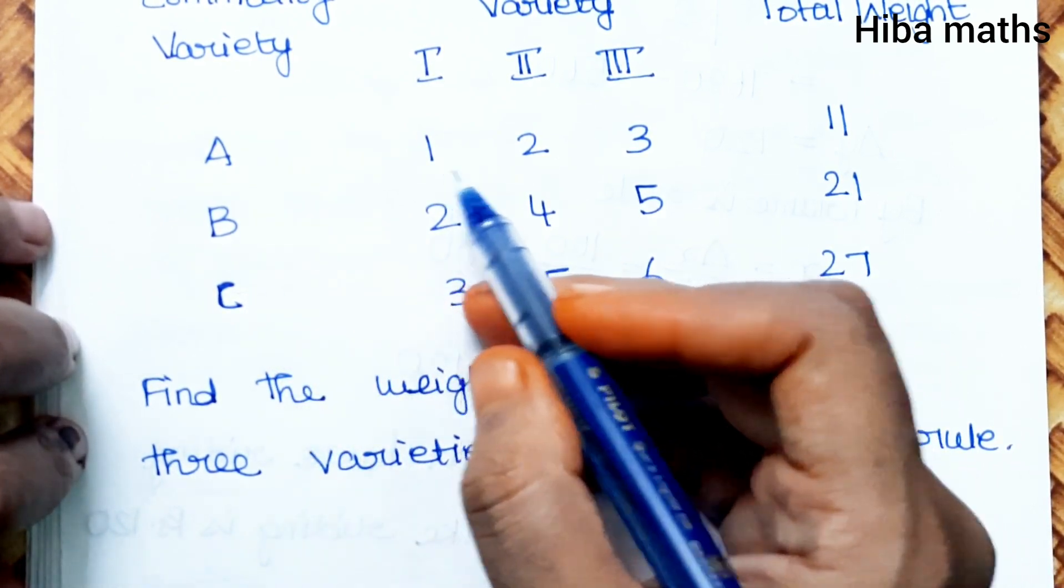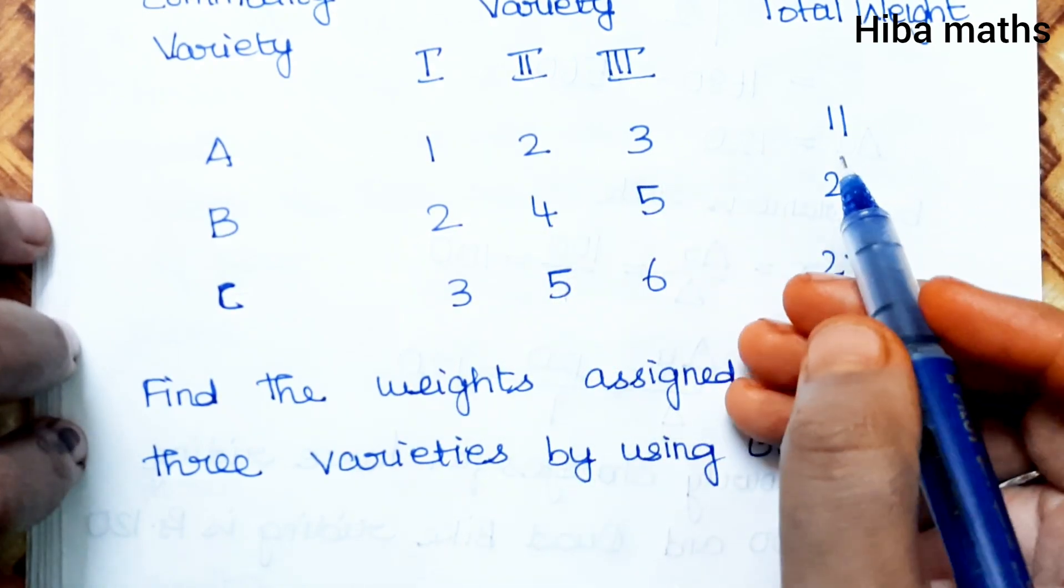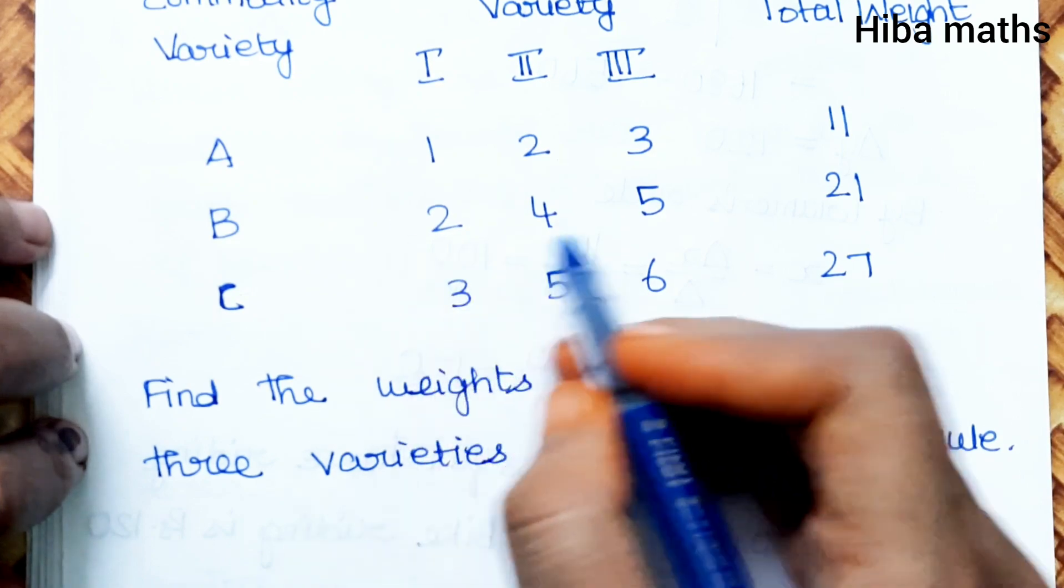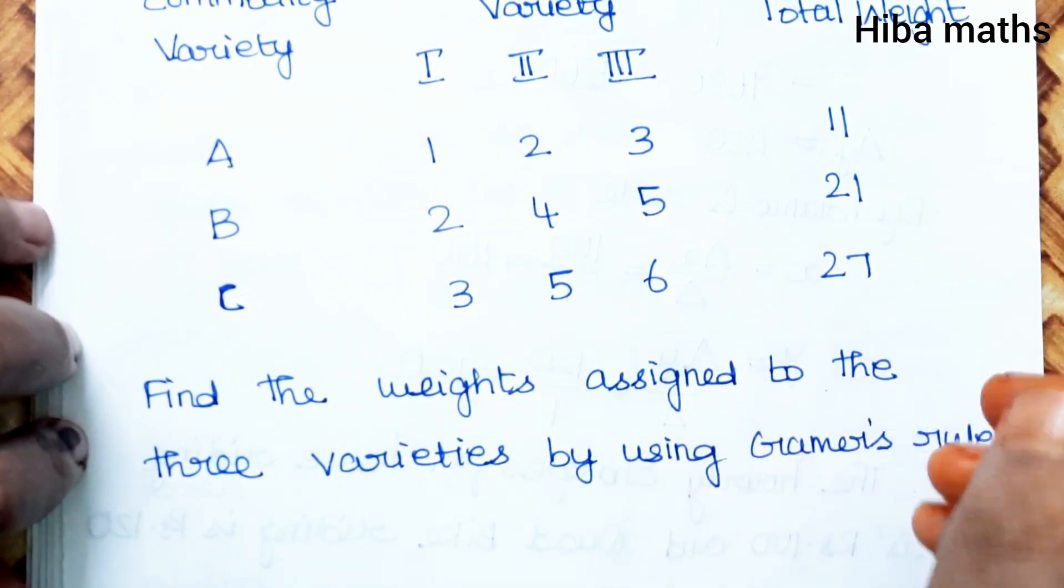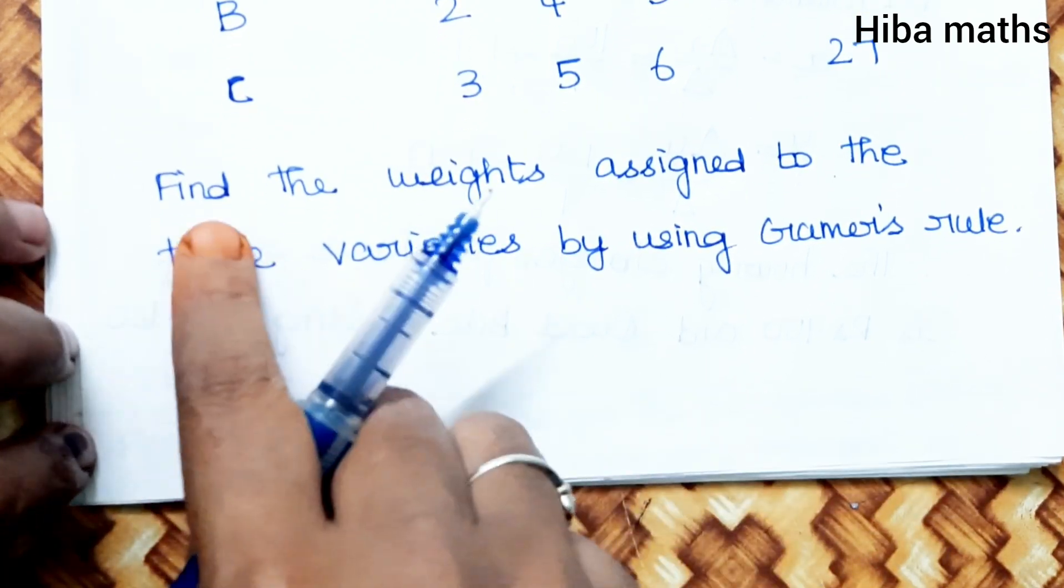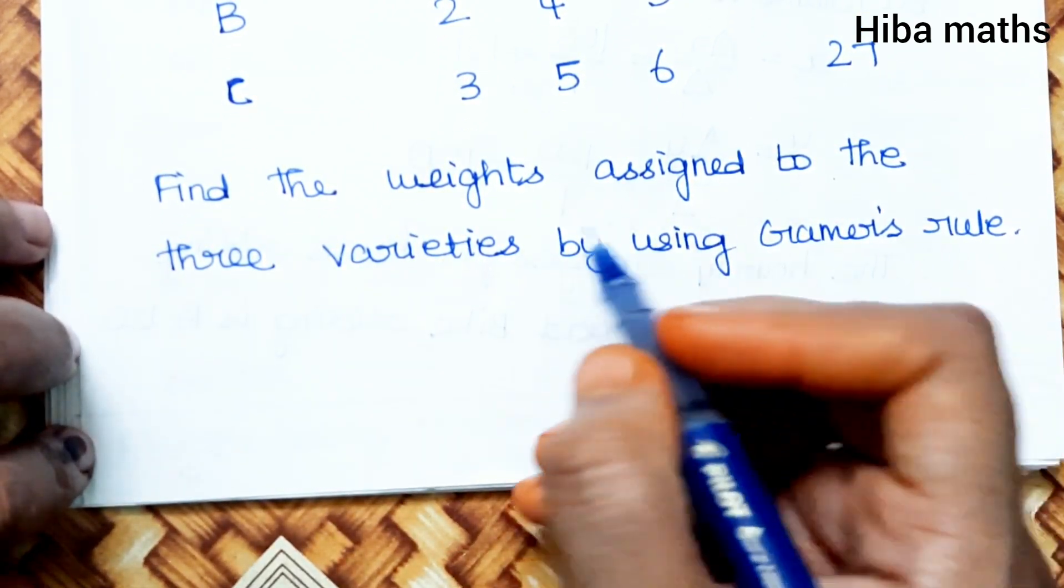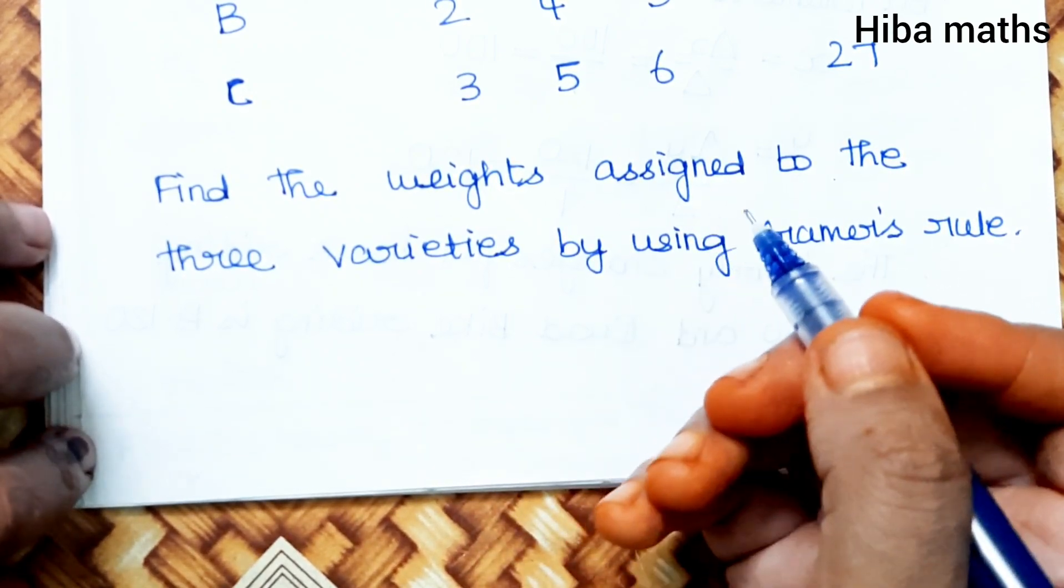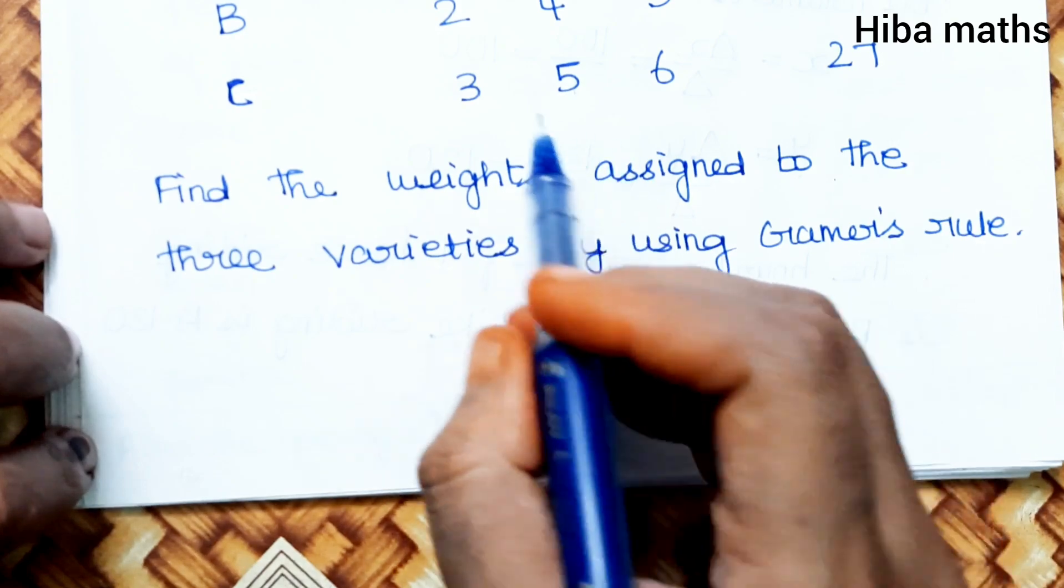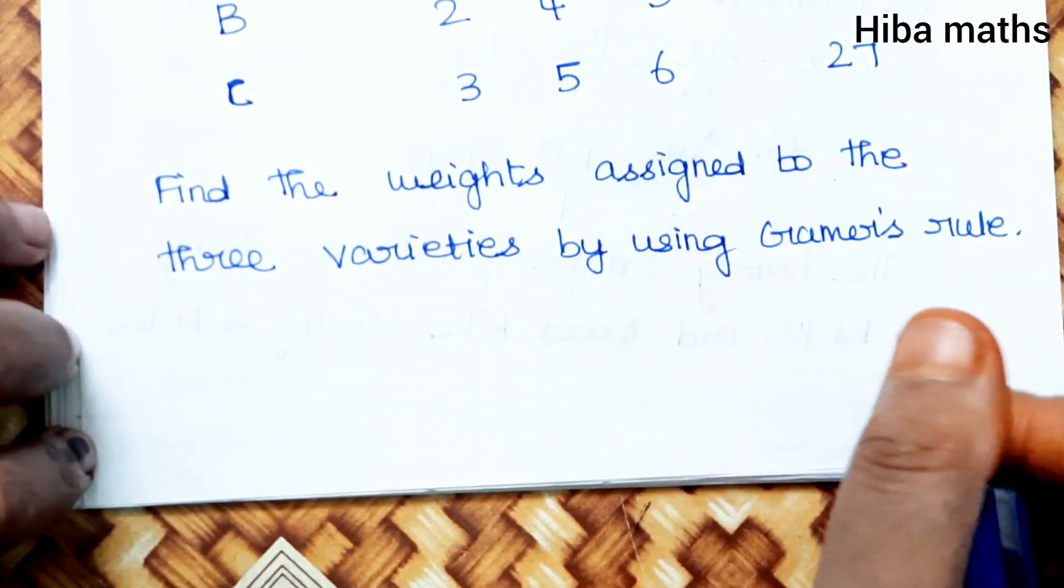So the table will form these matrices: A, B, C are three commodities with the three varieties X, Y, Z. By using Cramer's rule, weights assigned to X, Y, Z - this is a matrix form. We will solve this by Cramer's rule.